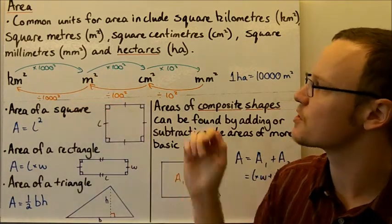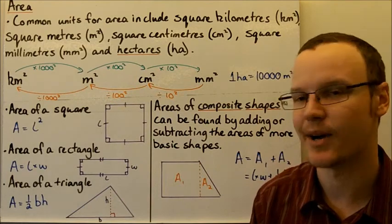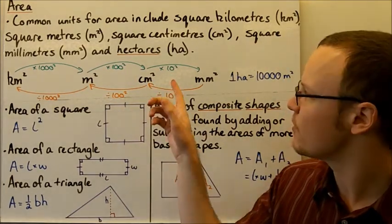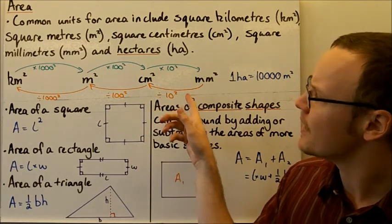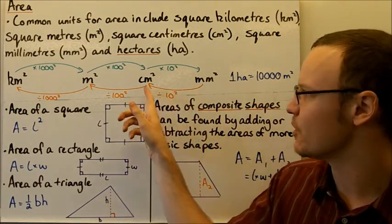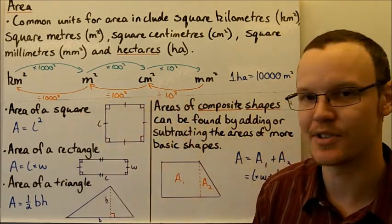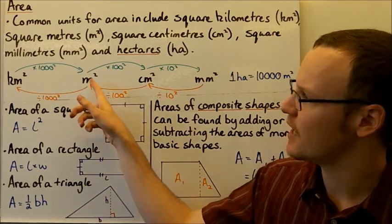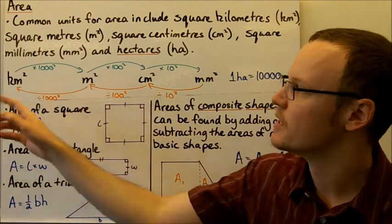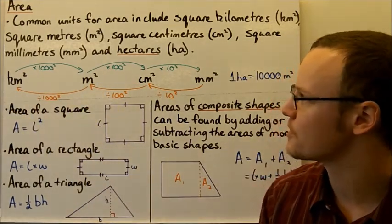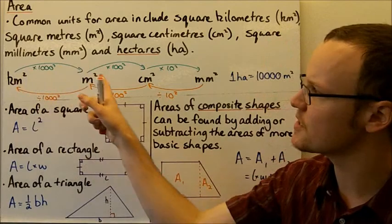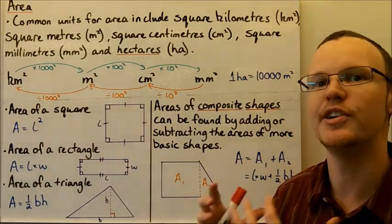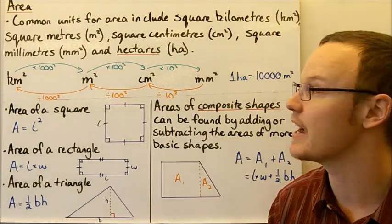Square metres to square centimetres: multiply by 100 squared. Square centimetres to square millimetres: multiply by ten squared. Going in the opposite direction, divide by ten squared; divide by 100 squared from square centimetres to square metres; and divide by 1,000 squared going from square metres to square kilometres. Each of these is a different unit — we don't need to square anything else, they're just units describing an amount of area.